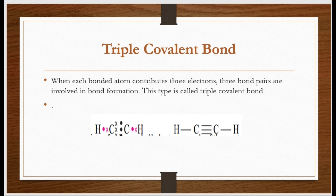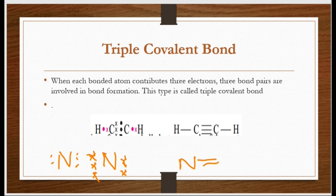Similarly, agar bond banane wala har atom 3 electrons share karta hai, to 3 bond pairs bante hain — such type of bonding is called triple covalent bond. Bahut dafa board mein poocha gaya hai: what type of bonding is present between two nitrogen atoms? Nitrogen ke valence shell mein 5 electrons hain, deficiency 3 ki hai, to wo 3 share karega — triple covalent bond ban jaayega. To aap nitrogen ke upar 2 lone pairs rakhenge aur triple covalent bond iske darmiyan draw karenge. Short question mein aap valence electrons separately likhenge, phir unke darmiyan bonding banaake dikhayenge, line se indicate karenge, aur overall N2 likhenge.